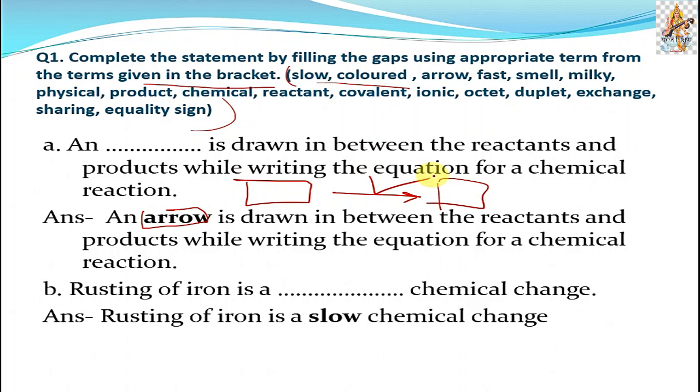Part b: Rusting of iron is a slow chemical change. Iron cannot be rusted in one day, it will take time to rust.